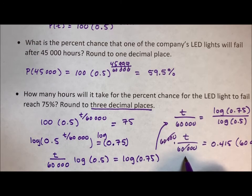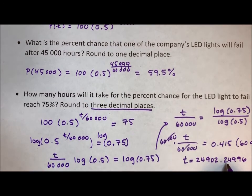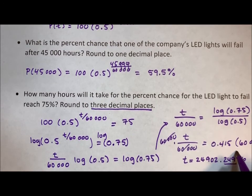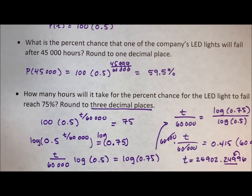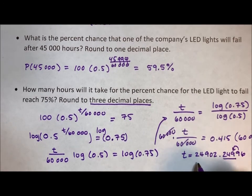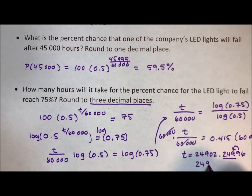And t equals, so it's 24902.24996. I read all that out because it says round to three decimal places. Well, that 9 is going to make a 250. So it's going to become 24902.250.